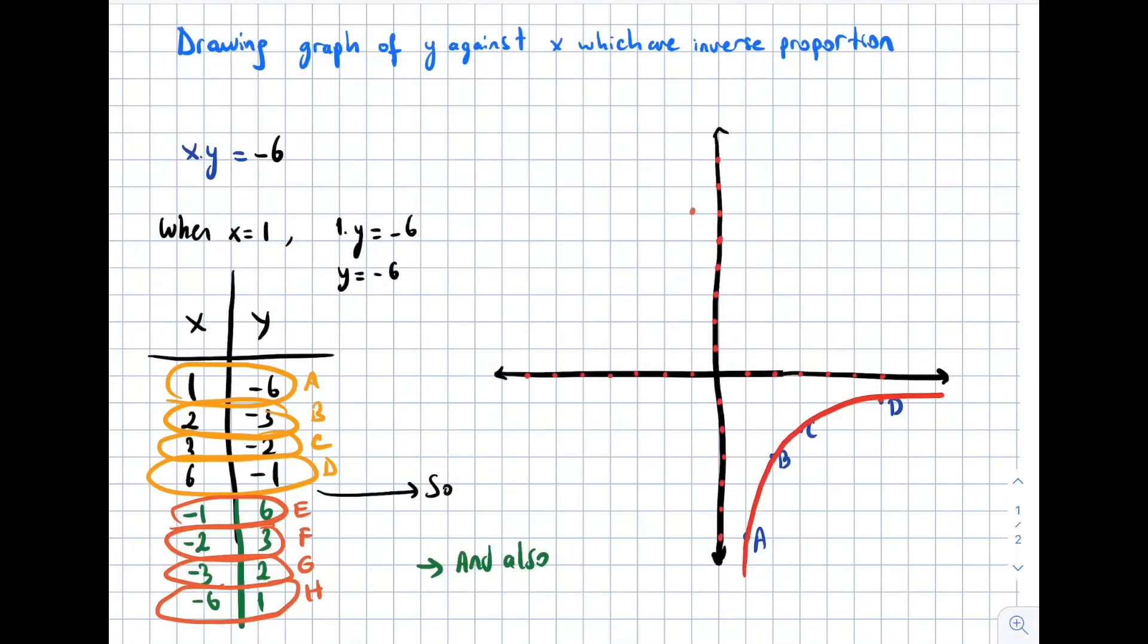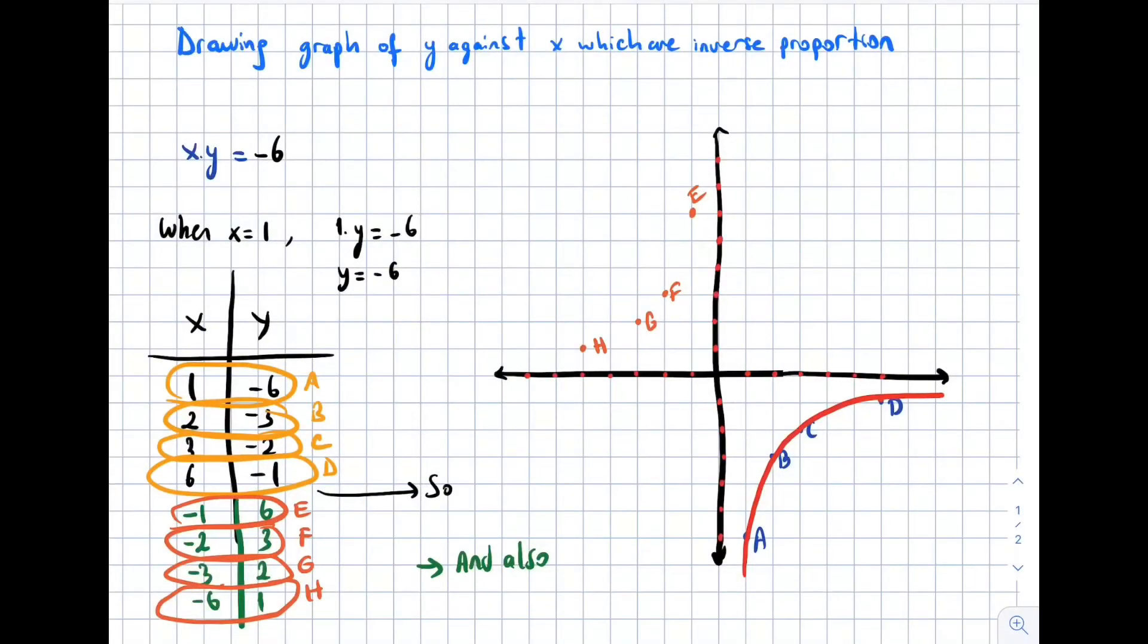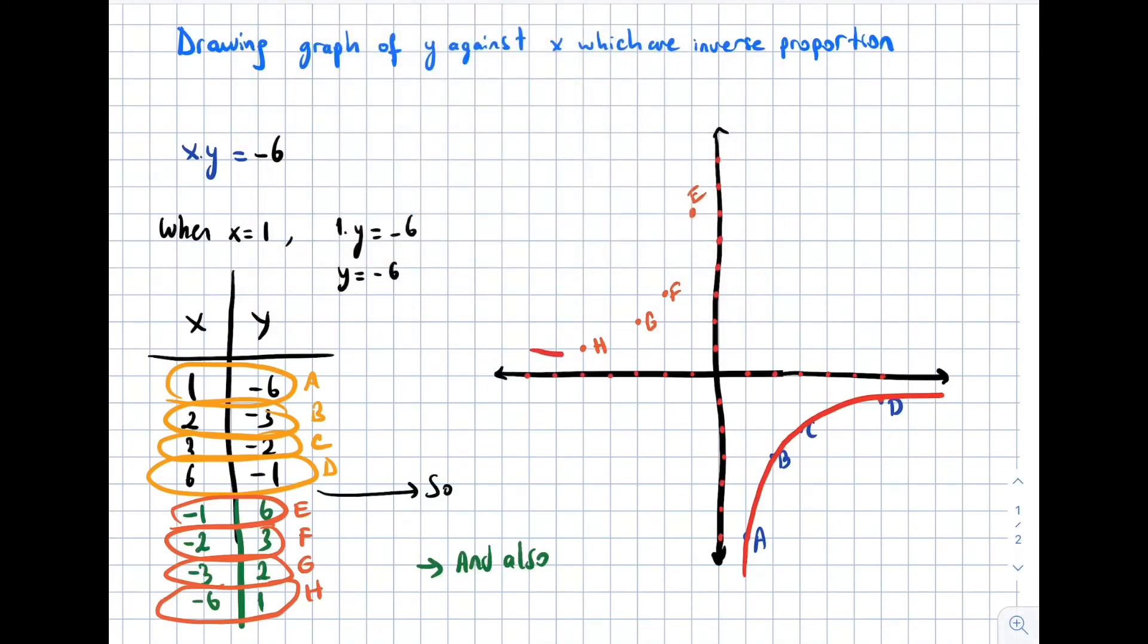We are going to plot those points again, we will do the same thing. Point E is there, point F is here, point G is negative 3 and 2, point H is when x is negative 6, y is 1. We'll just draw the curve line again passing through those points and we finalize our question. We drew our graphs.